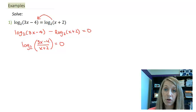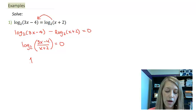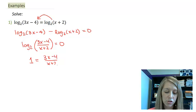And then that gives me, converting it into my exponential form, 2 to the 0 power, or 1, is equal to 3x minus 4 over x plus 2.